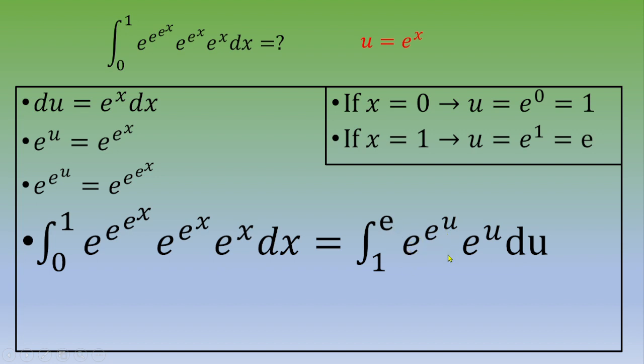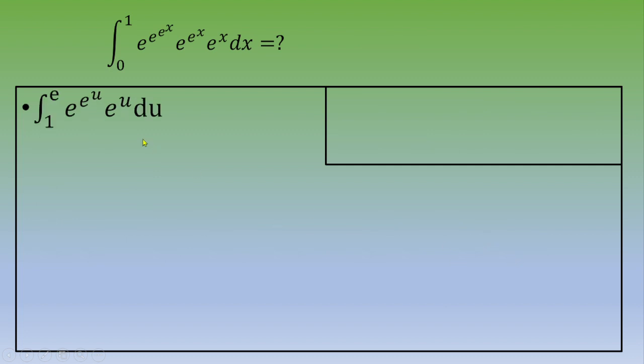If you plug everything in now, you get integral from one to e of e to the e to the u times e to the u du. So now we would like to solve this integral. We are going to do another u substitution.